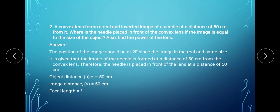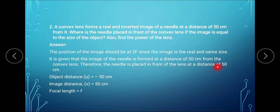Since the size of the image is equal to the size of the object, this is possible when the object is kept at twice the focal length — when the object is at 2f, its image is formed at 2f and the sizes are equal. Moreover, the distance of the object from the lens is also equal to the distance of the image from the lens. Therefore, since the distance of the image from the lens is 50 cm, the needle is placed in front of the lens at a distance of 50 cm.